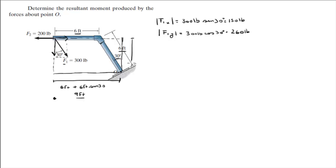And the length of the lever arm is given by 6 feet cosine of 30, which means that it's equal to 5.2 feet.